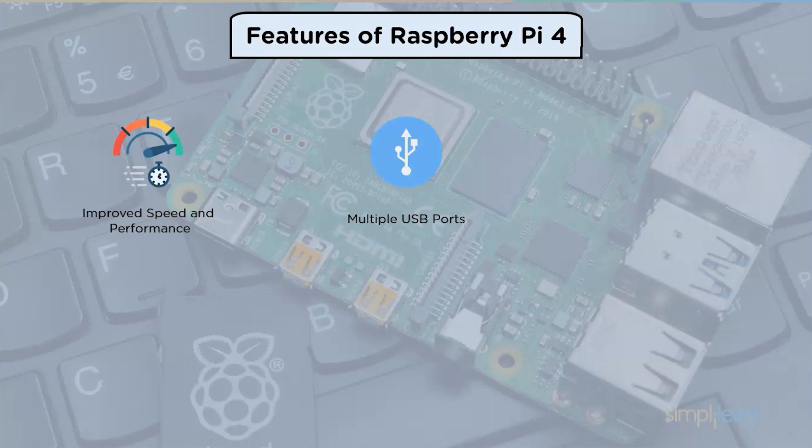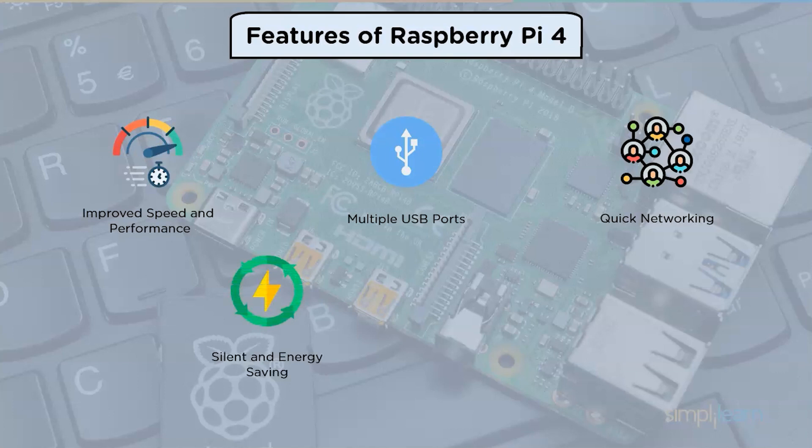Multiple USB ports: the USB ports on Raspberry Pi 4 have been upgraded. In addition to two USB 2.0 connections, there are two USB 3.0 ports which can transport data up to 10 times quicker. Quick networking: gigabit Ethernet, wireless networking, and Bluetooth are also included.